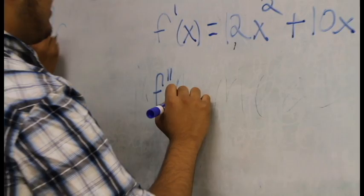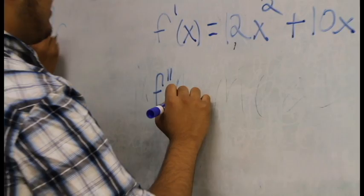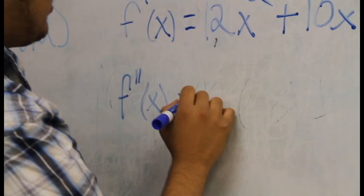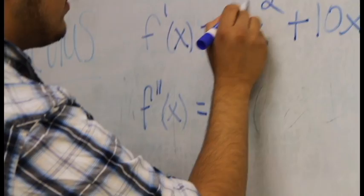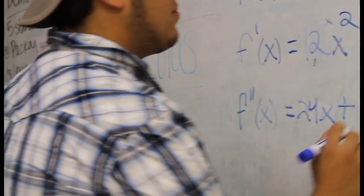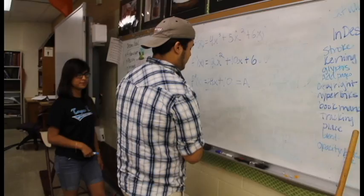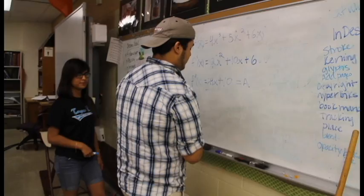Now, to go into the next step — the second derivative. You do f double prime of x equals: same process — 2 times 12 equals 24x. Then for the next term, 10x has no exponent, so you just leave it as 10. And for the 6, all constants completely drop. That gives you your second derivative, which equals acceleration. And that is a simple derivative problem.